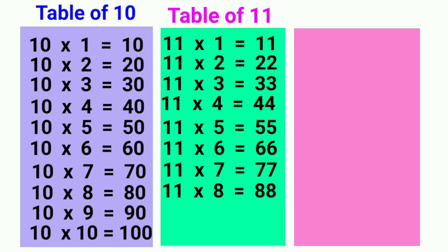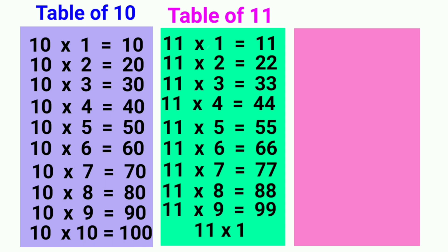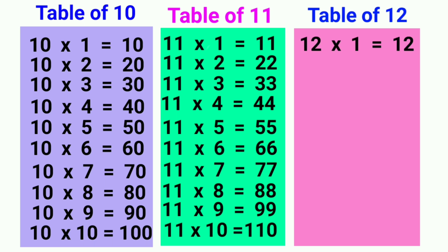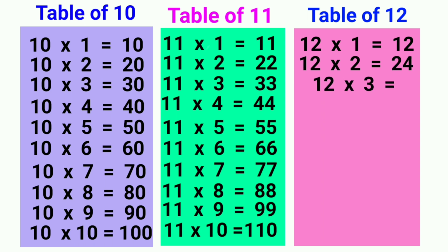11 eights are 88, 11 nines are 99, 11 tens are 110. 12 ones are 12, 12 twos are 24, 12 threes are 36,